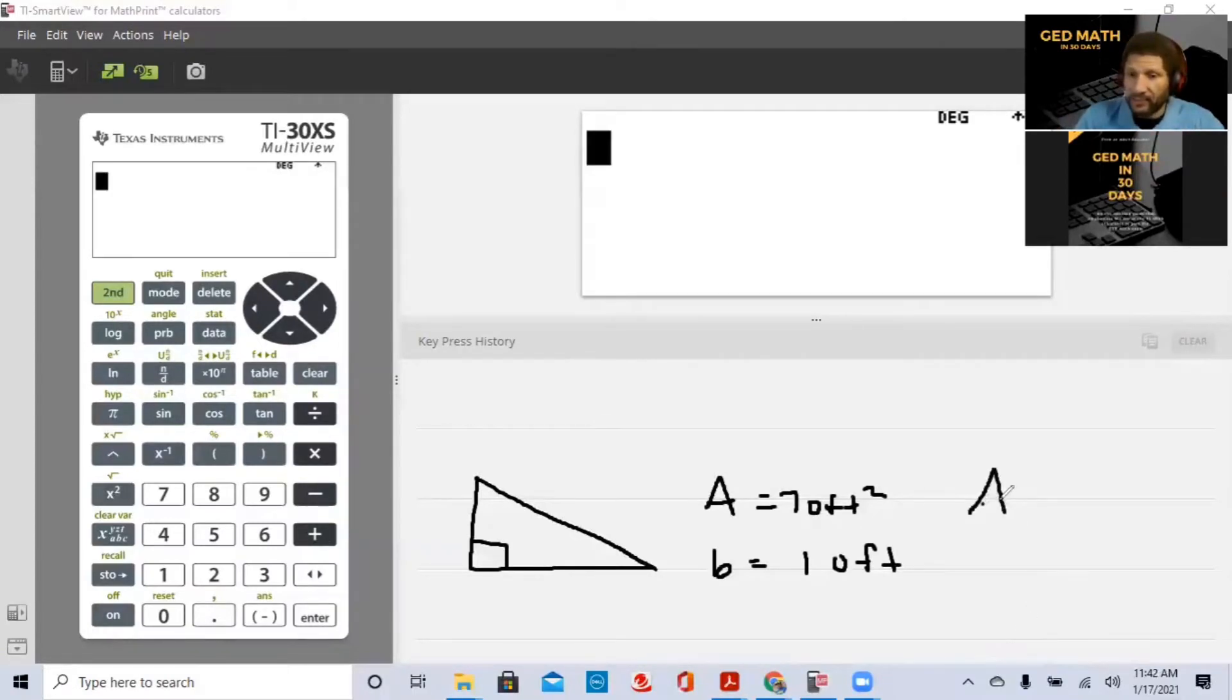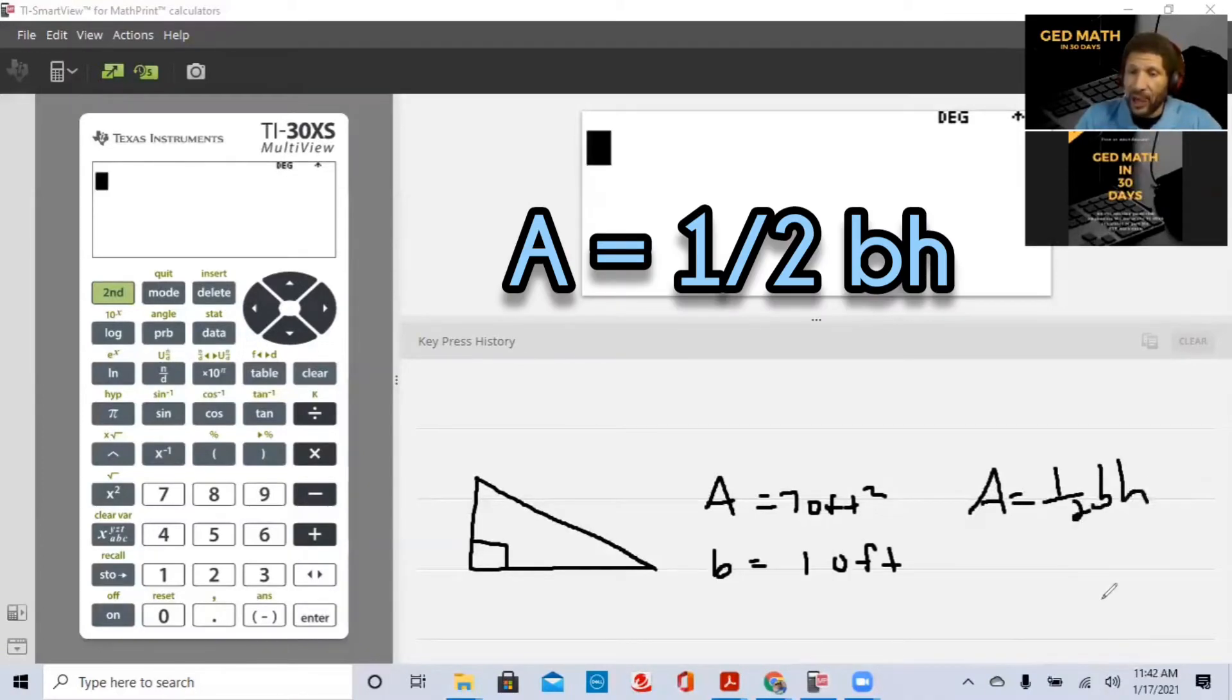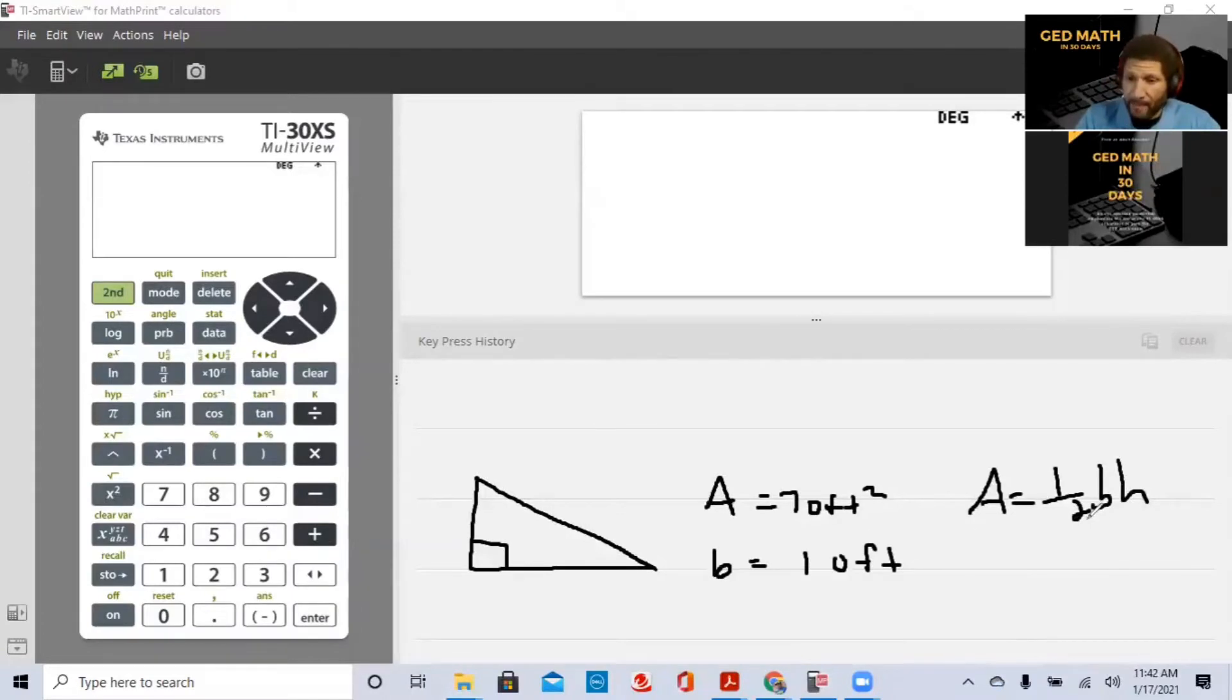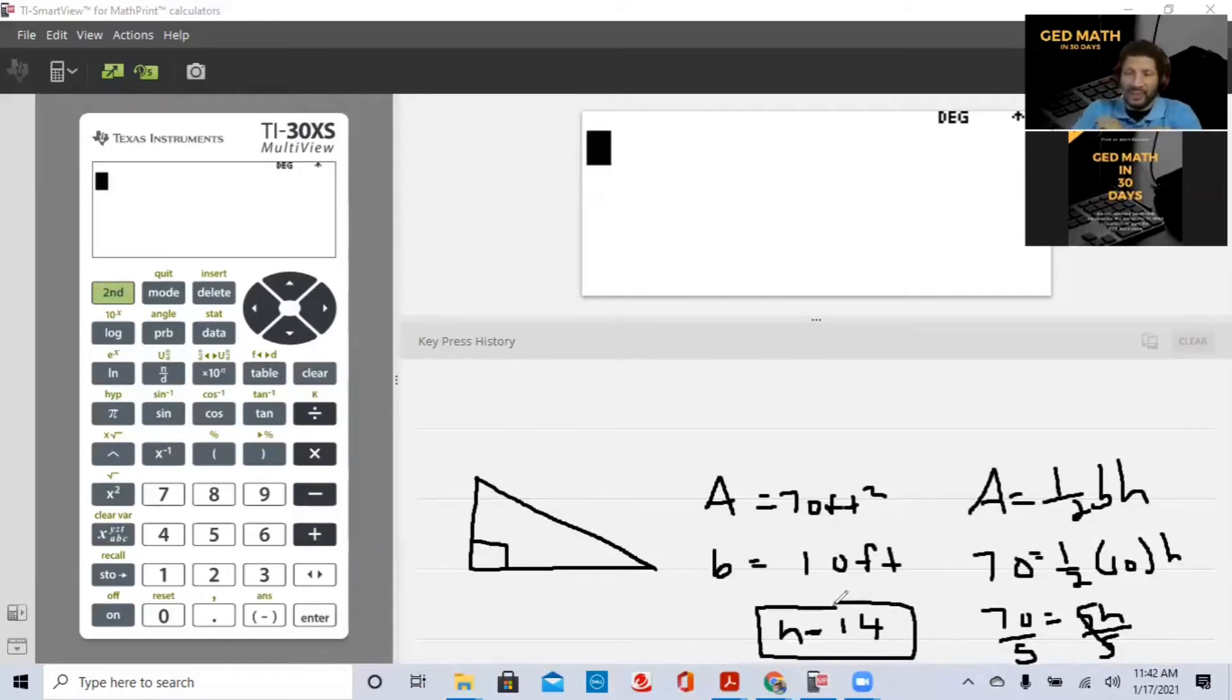So again, always start with your formula. Area equals one-half base times height. So 70 equals one-half times 10 times height. Half of 10 is 5 multiplied by H. We're going to get H by itself. We're going to divide both sides by 5. The 5s cancel and we will get our height is equal to 14. So your height is 14. A lot of people make the mistake - they thought the height is 7 because 10 times 7 is 70. No, don't miss this problem. The height is 14.